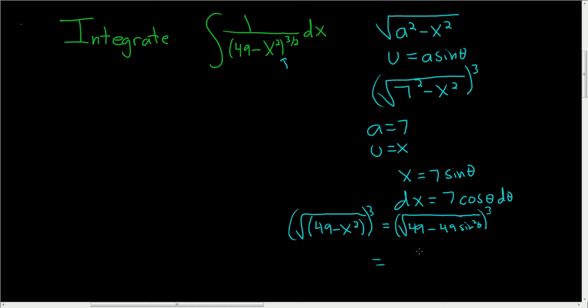And this whole thing here is cubed. And so this is equal to, well, we can factor out a 49. So this will be the square root of 49. And then we have the square root of 1 minus sine squared. And this whole thing is being cubed.